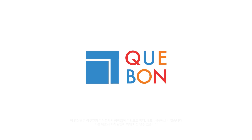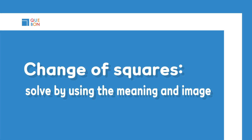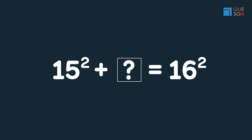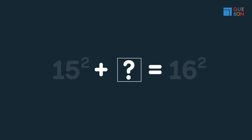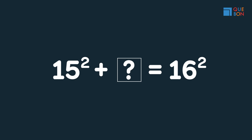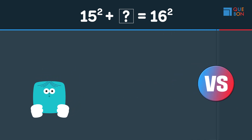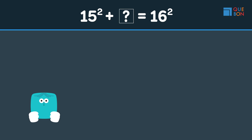Today we'll learn about squaring and adding numbers. The problem is: what should be added to 15 squared to equal 16 squared? We'll solve this by visualizing. First, let's see how Sweaty and Quera solve this problem.